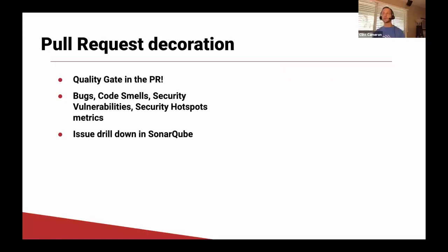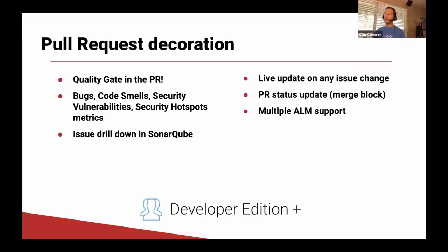You saw that we were able to drill down on an issue in SonarCube, and when we changed the status of an issue, that gave us a live update back into our pull request in GitHub. You also saw the ability to block a merge based on your quality gate profile — in this case, we blocked because we had an unreviewed security hotspot. And of course you saw the multiple ALM support.